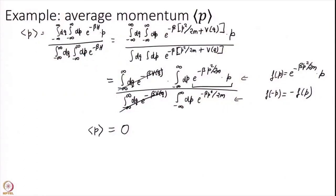This is perhaps something you already expected. The average momentum should be 0 — at thermal equilibrium all directions are equivalent, so the particle has equal tendency of moving forward as going backward. It does not mean that every particle is at rest; the average is 0.